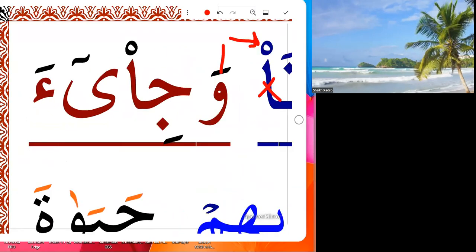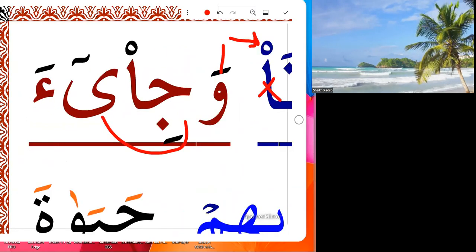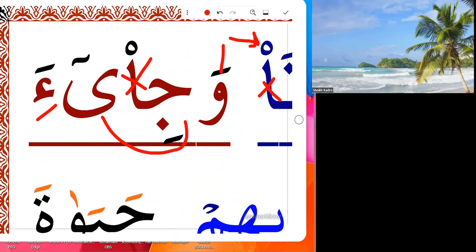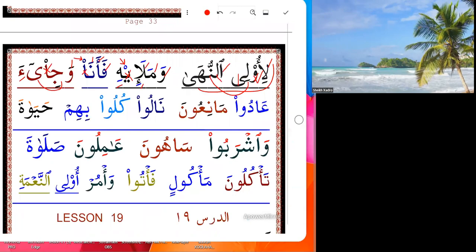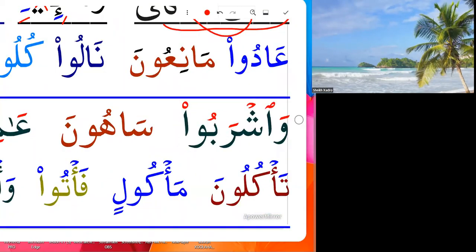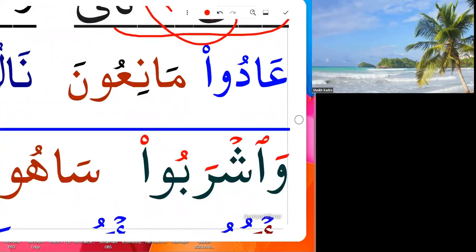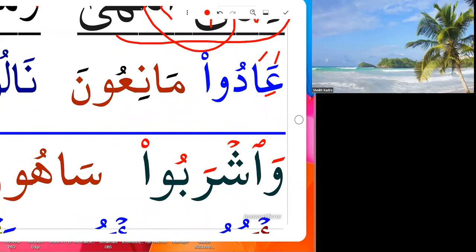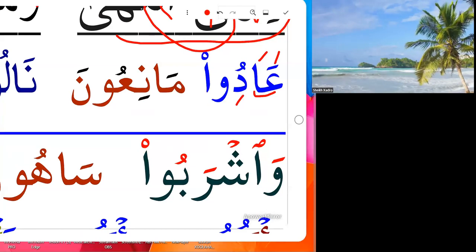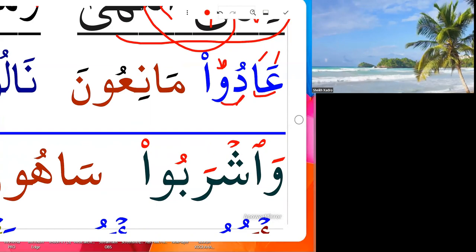Wa ji a — this ala silent to us, wa ji a. In Surah Al-Fajr: wa ji a yawmai din di jahanna. No, it's not 'a' — what's the aleph there? Say 'a'. No, it's not 'do' because we're waiting here — a do, ala silent, a do.